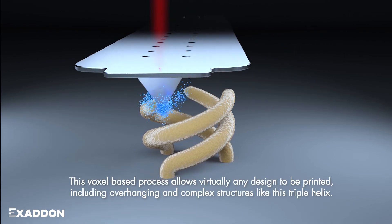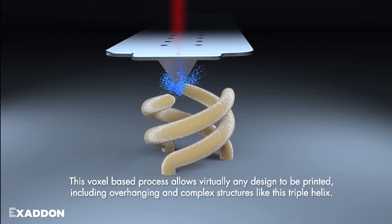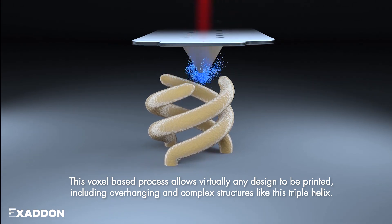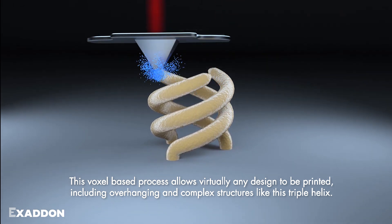This voxel-based process allows virtually any design to be printed, including overhanging and complex structures like this triple helix.